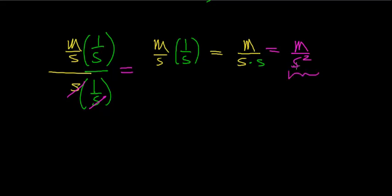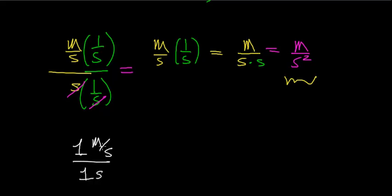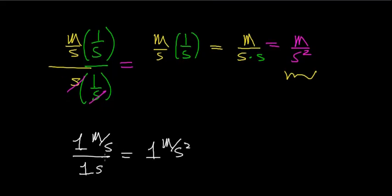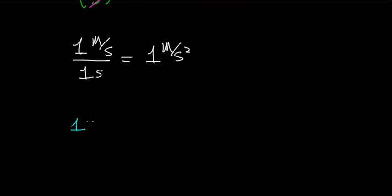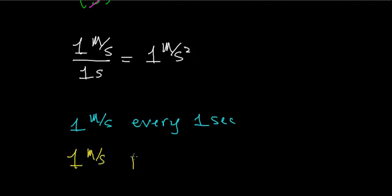Meters per second squared is shorthand notation for a meter per second per second — a change in velocity per change in time. Using our example of 1 meter per second squared, that means the velocity changes by 1 meter per second every single second. Another way to express it: the velocity changes by 1 meter per second per 1 second. Both expressions mean the exact same thing.